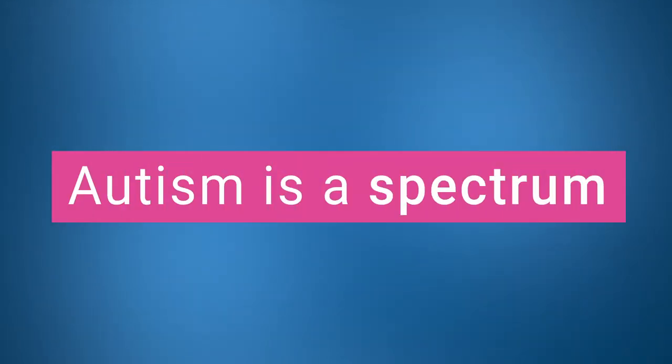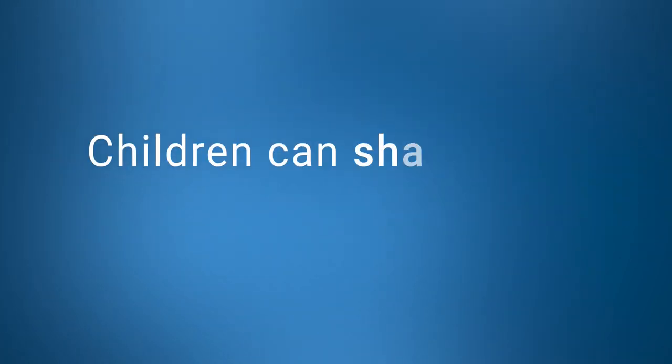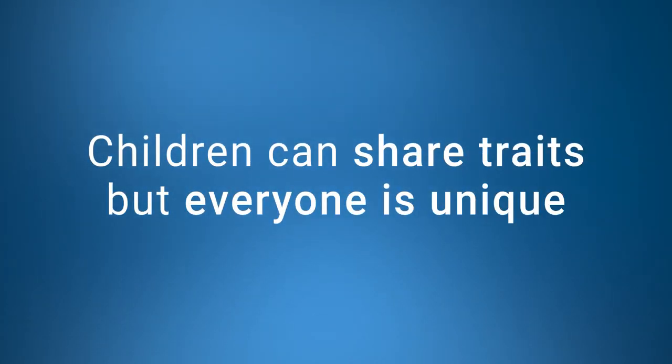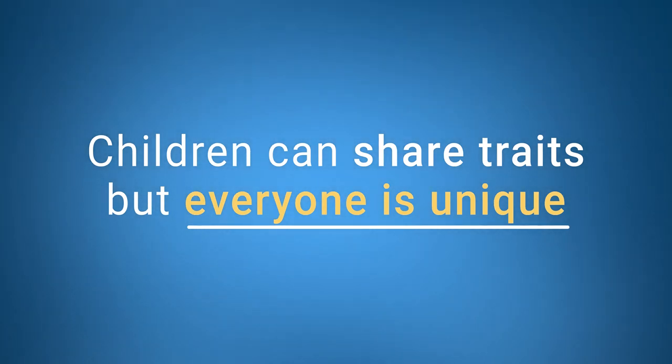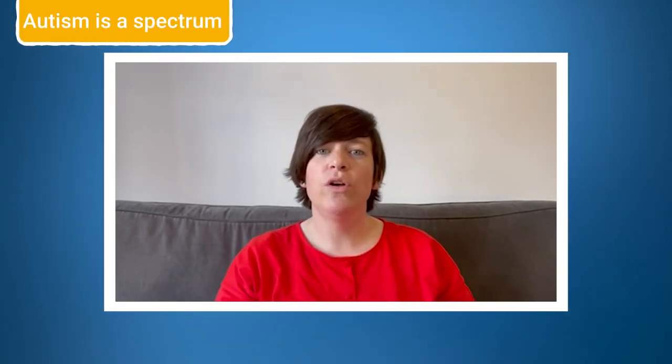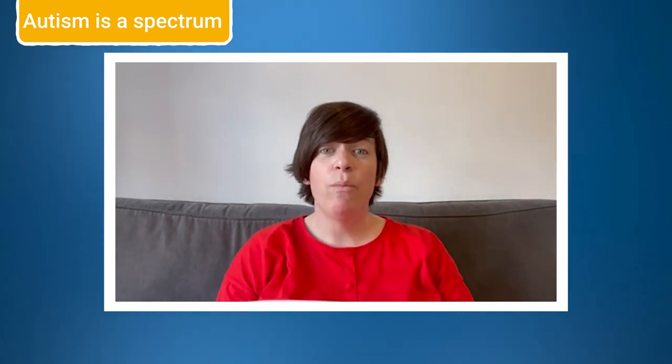Autism is a spectrum. This means that although children can share common characteristics and traits, everyone is unique and different. Strategies that work for one autistic child may not always work for another. Spend time working with the individual child and the staff that are involved with them to discuss their needs. Really get to know the child.